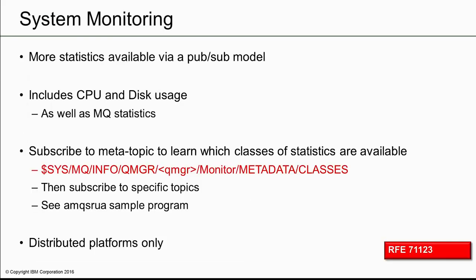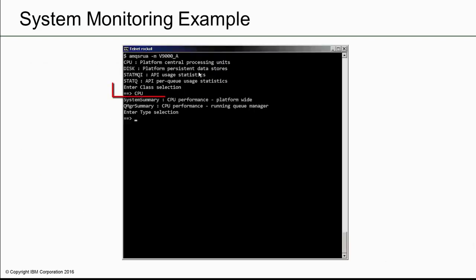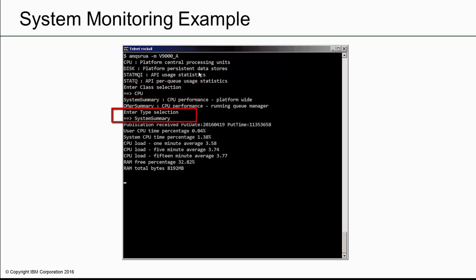Another PubSub-based piece of monitoring collects key information about not just the queue manager, but also the system on which the queue manager is running. So we can now report on disk and CPU status as well as the queue manager itself. A sample program, AMQSRUA, shows how to access these reports. This example shows the recent CPU usage for the machine where the queue manager is running.